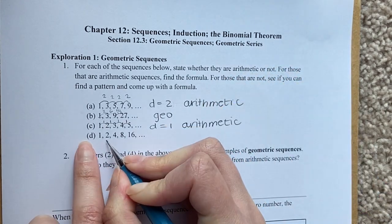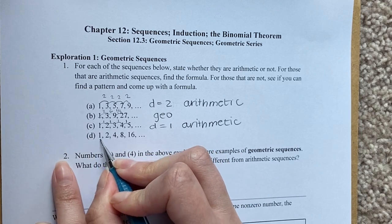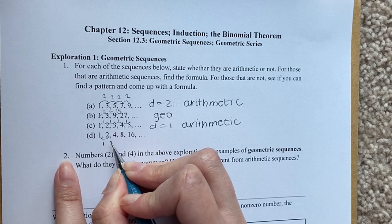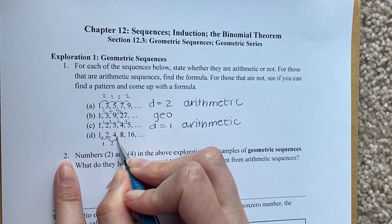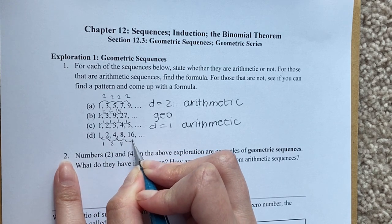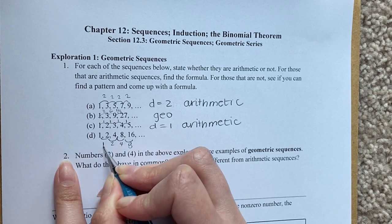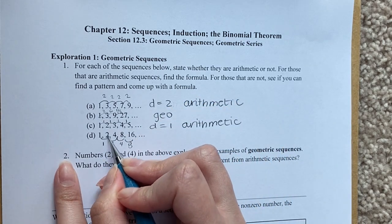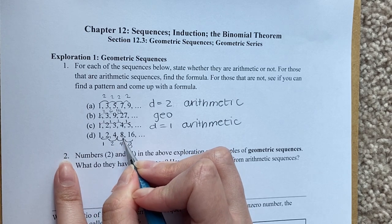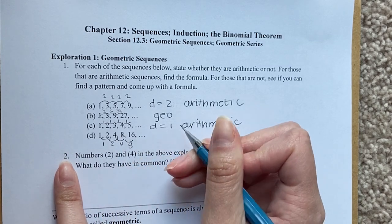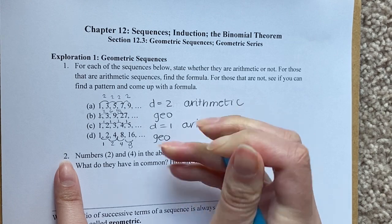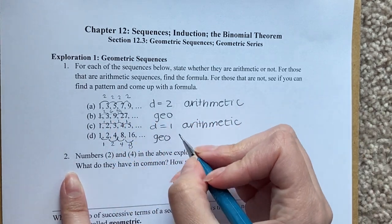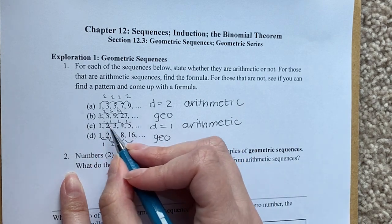The next sequence: the difference is 1, then 2, then 4, then 8. The pattern is 2 to the power of 0, 2 to the power of 1, 2 to the power of 2, 2 to the power of 3, and 2 to the power of 4. So this is a geometric sequence. That's how you can tell if it's geometric or arithmetic — the pattern is pretty clear.